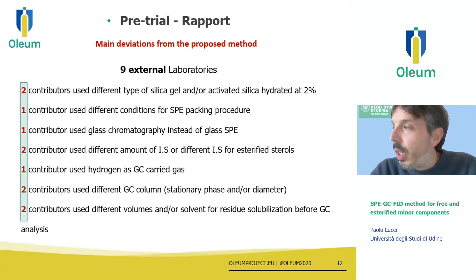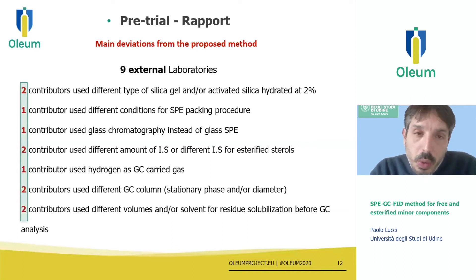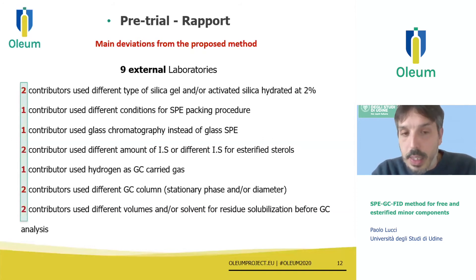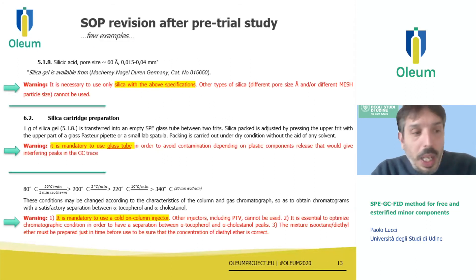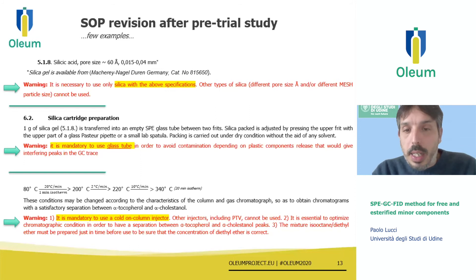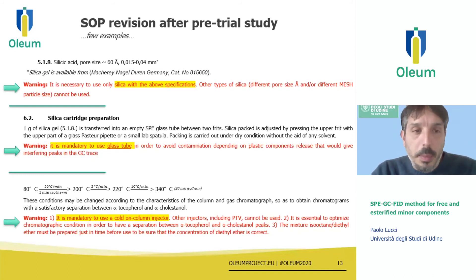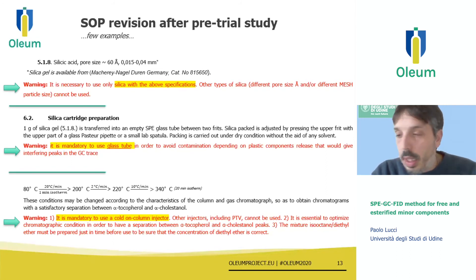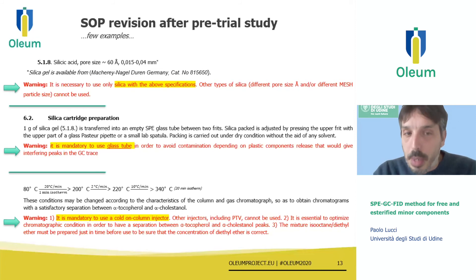Deviations included changes in the solvent employed, the type of injection mode, and the type of silica used, among others. This was not a good experience analytically, but it was a really important exercise for the improvement of the SOP to be delivered to labs participating in the final trial proper. As a result, we added several warnings to the SOP — about the necessity to use a specific type of silica, the use of glass tubes, the mandatory use of cold-on-column injection, and how to integrate the chromatogram — in order to avoid mistakes in the trial proper.